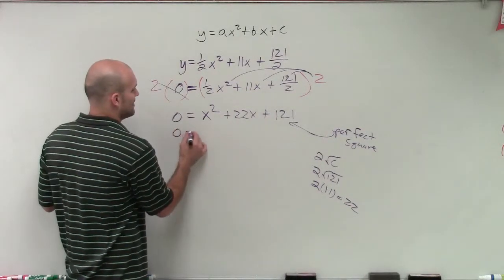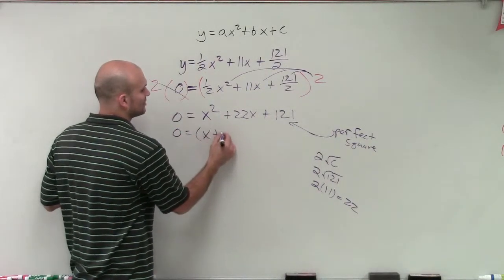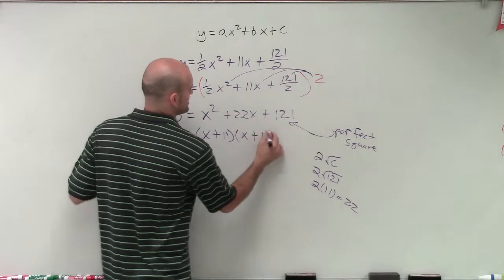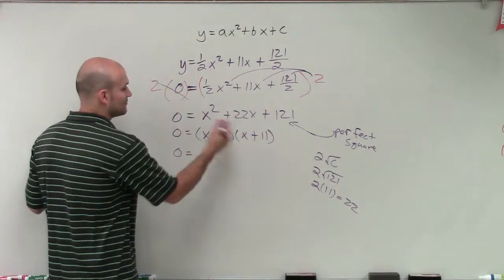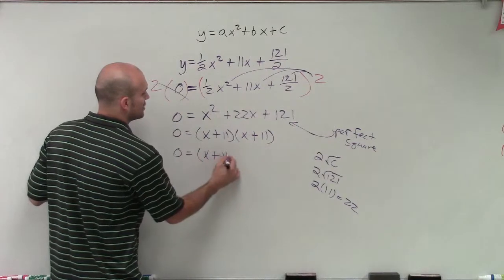And since it's positive, my two roots are going to be x plus 11 times x plus 11. Therefore, now I can rewrite this as x plus 11 squared.